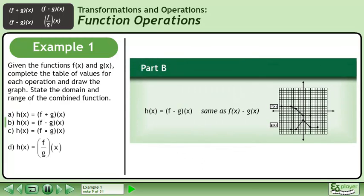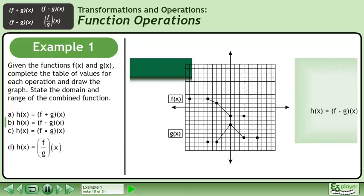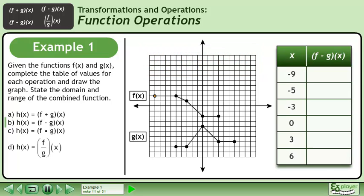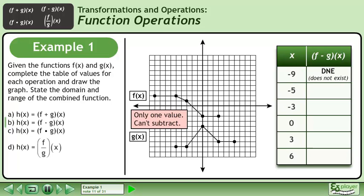In part b, we'll draw the graph of h equals f minus g. f minus g means subtract the y-values of the two graphs. The first point only exists on one of the graphs, so since we have only one value, we can't subtract. Record this in the table as DNE, which stands for does not exist.